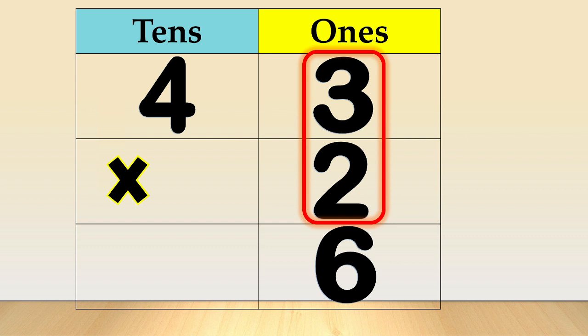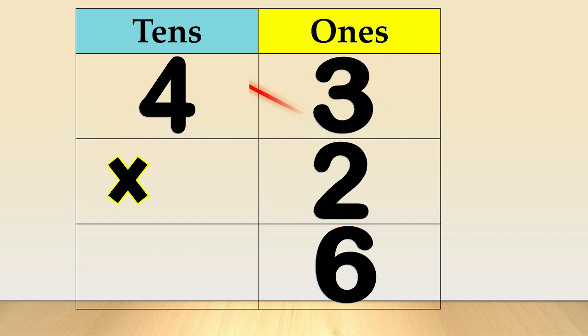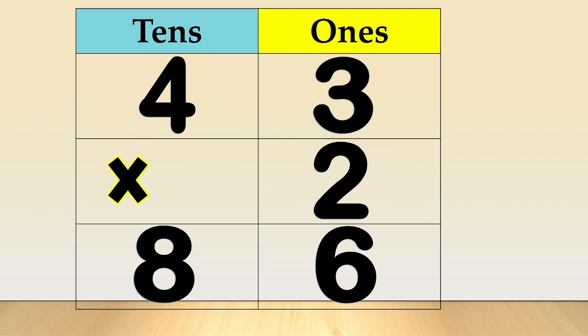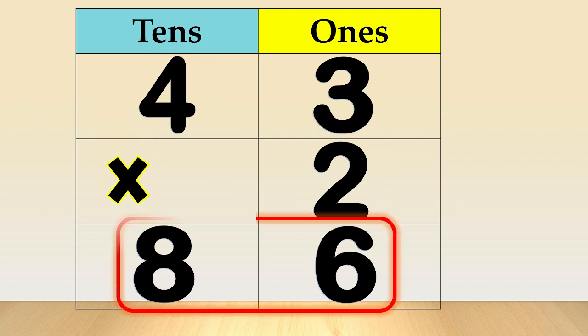Then, multiply the digit in the tens place with the multiplier 2. Therefore, 4 times 2 is equal to 8 tens. Our final answer is 86.